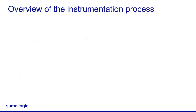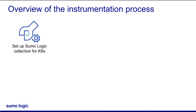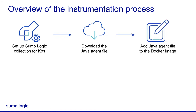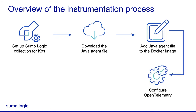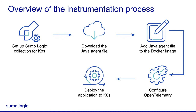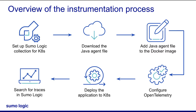Let's take a look at the steps to instrument a Java app and then deploy it. To begin with, I'll set up the Sumo Logic collection for Kubernetes. Next, download the Java agent for the OpenTelemetry Java instrumentation in .jar format. Add the OpenTelemetry Java agent .jar file to the Docker image of the Java application. Configure OpenTelemetry instrumentation by updating the application for Kubernetes deployment. Deploy the application to Kubernetes, and then search for the traces of the Java app in Sumo Logic.